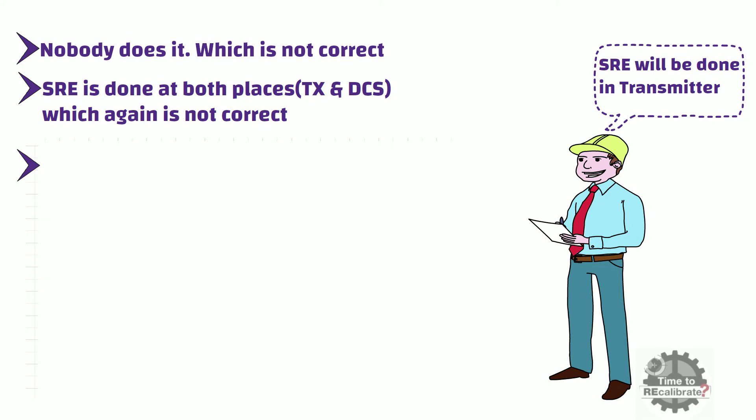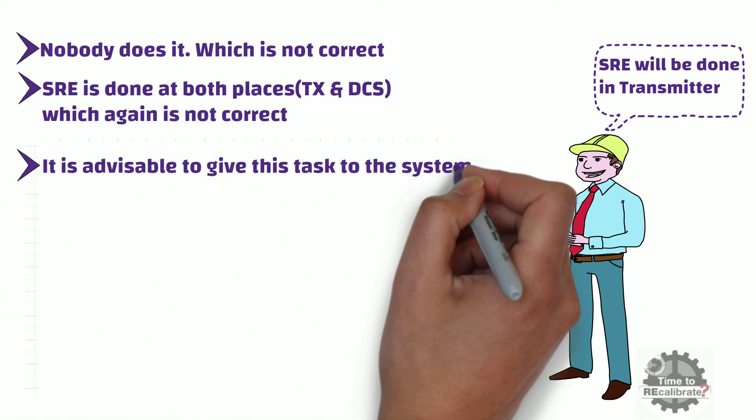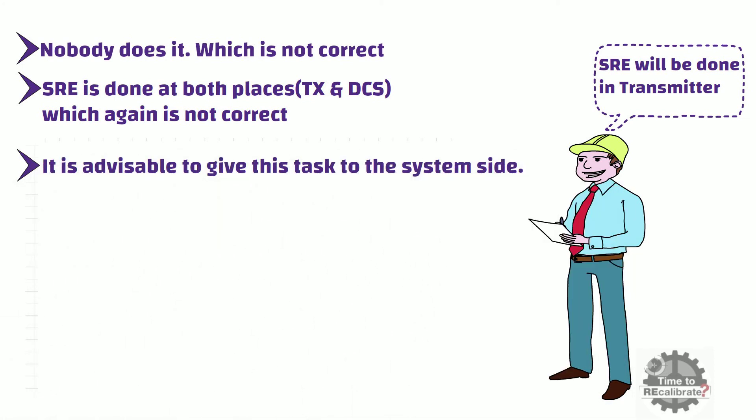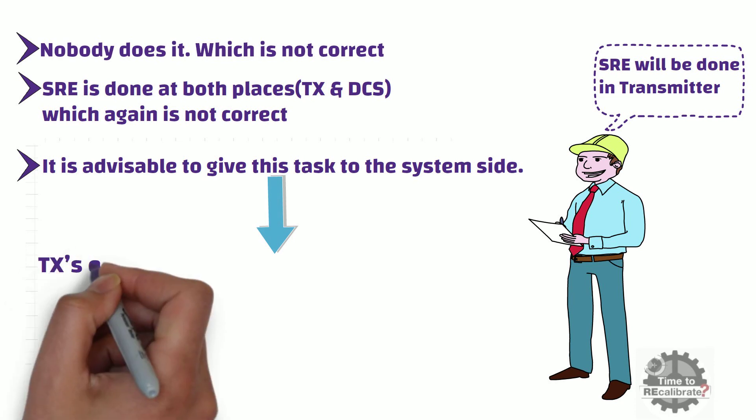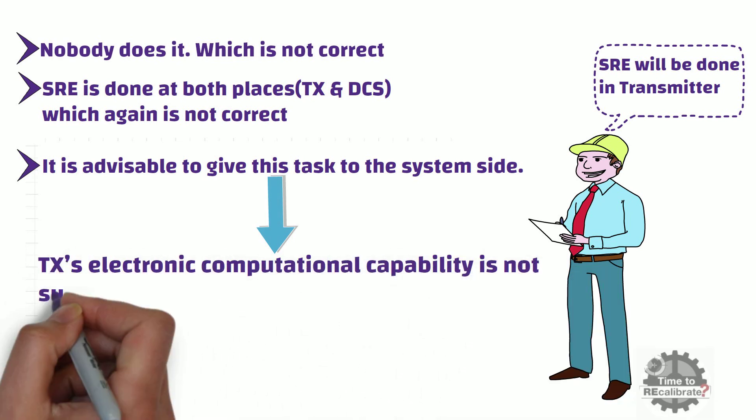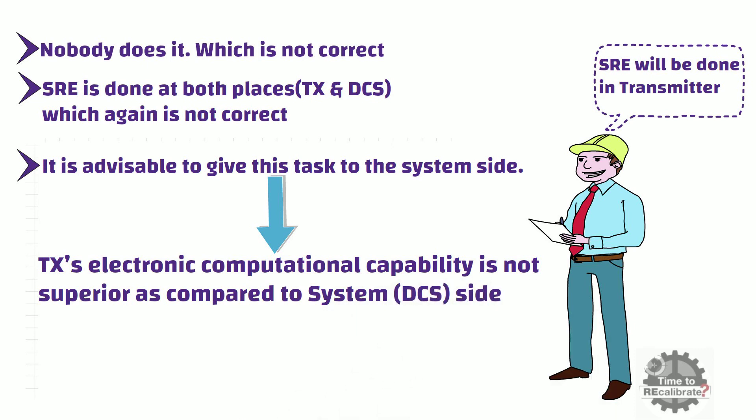Ideally, it is advisable to give this task to the system side. The reason behind this approach is that the transmitter's electronic computational capability is not superior as compared to system or DCS side.